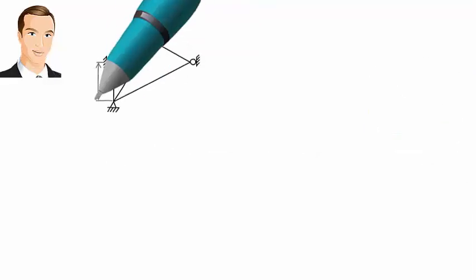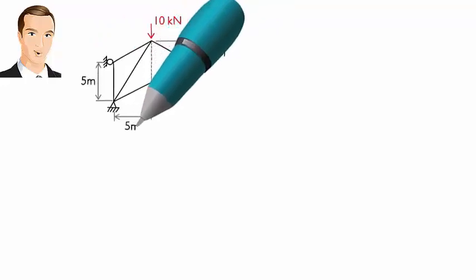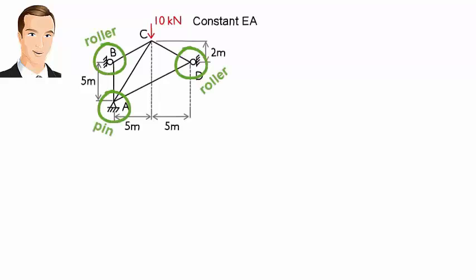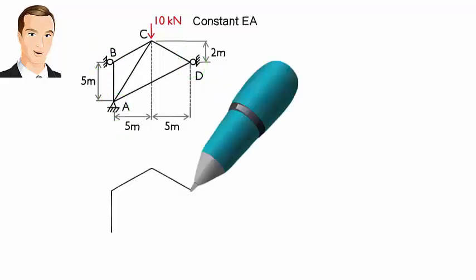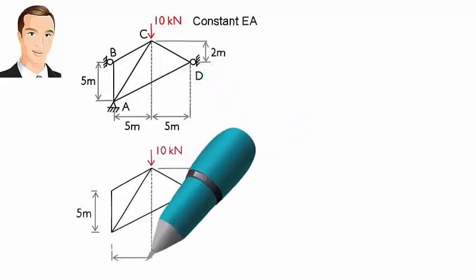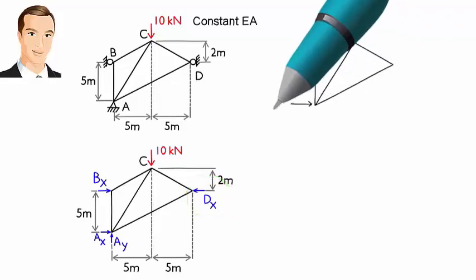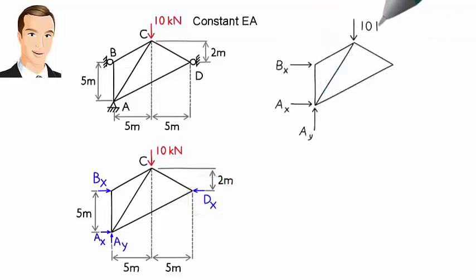Here is another example. This truss is also indeterminate externally. The truss, having four support reactions, is indeterminate to the first degree. So we are going to make one of the support reactions the redundant force. Here is the free body diagram of the structure. Let's pick the roller reaction at D as the redundant force. We note that in the original truss, the horizontal displacement at D is zero.